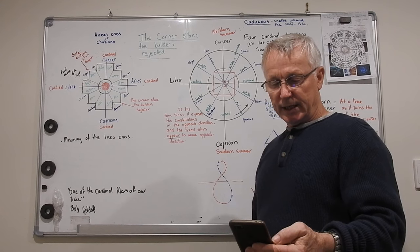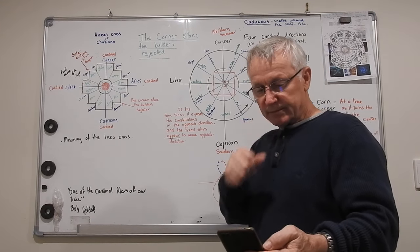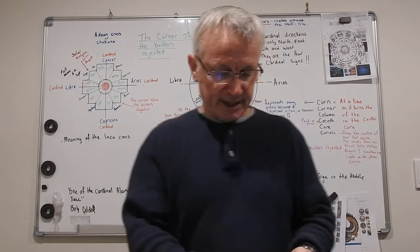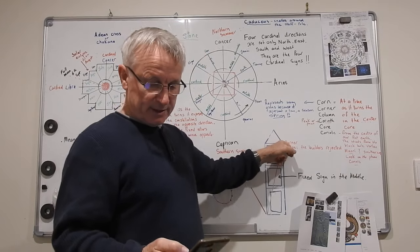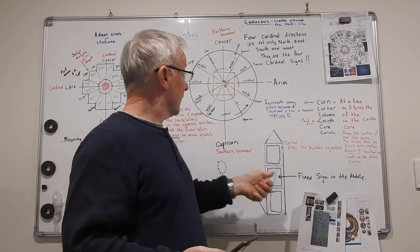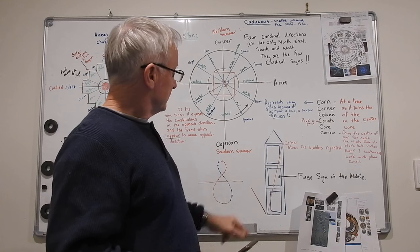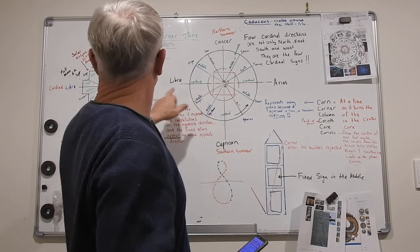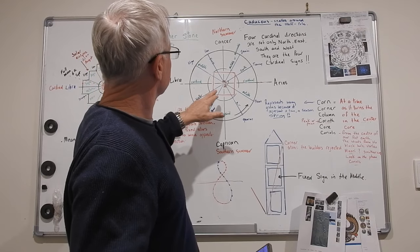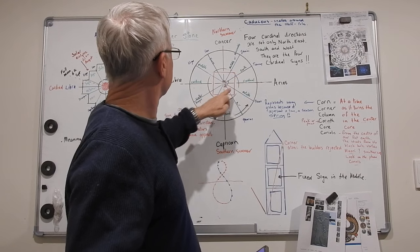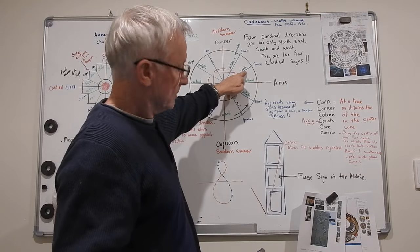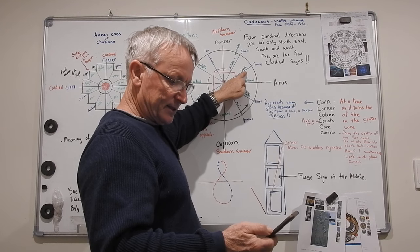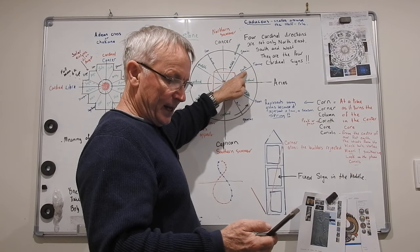I will praise thee for thou hast heard me and art become my salvation. The stone which the builders refused become the headstone of the corner. So it's the headstone, it's the stone at the top here as it turns the corner in the season. This must be the equinoxes. The stone which the builders refused to become the headstone of the corner, this is the Lord's doing, it is marvelous in his eyes. This is the day which the Lord has made, he will rejoice.